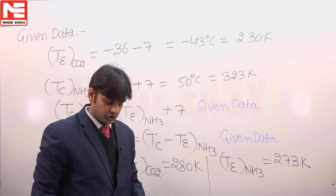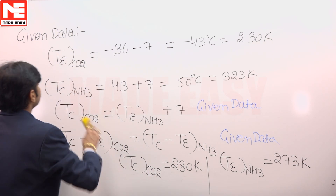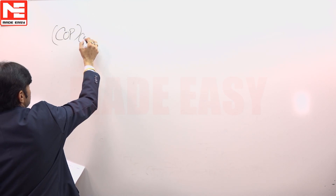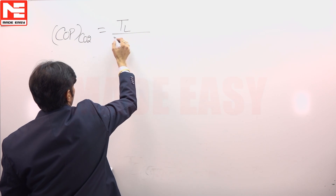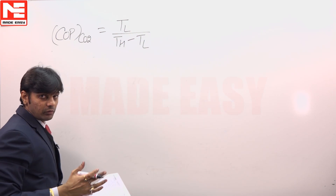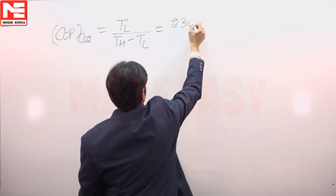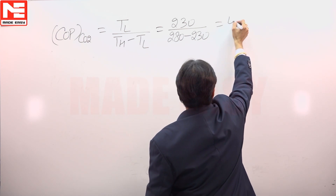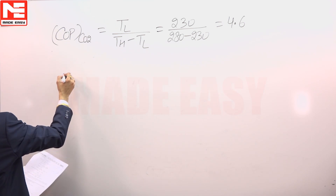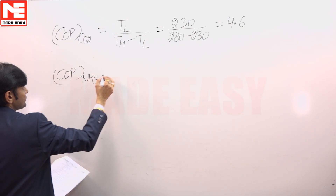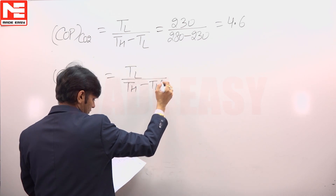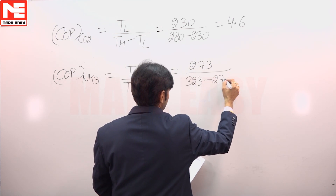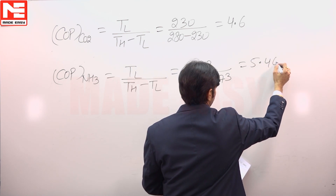Now we will calculate the COP for the ammonia and CO2 refrigerant. The desired effect is at the lower temperature. The COP for CO2 is T_lower divided by (T_higher minus T_lower), equal to 230 divided by (280 minus 230), which gives 4.6. Similarly, the COP of the ammonia refrigerant is 273 divided by (323 minus 273), which is equal to 5.46.